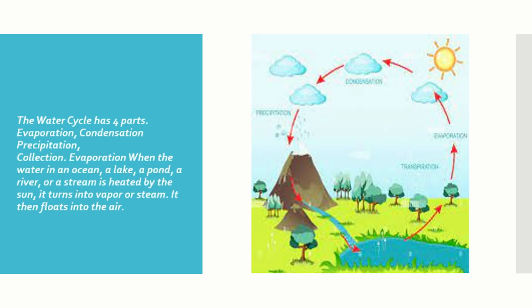The water cycle has four parts: evaporation, condensation, precipitation, and collection. Evaporation is when the water in an ocean, a lake, a pond, a river, or a stream is heated by the sun — it turns into vapor or steam, and then floats into the air.